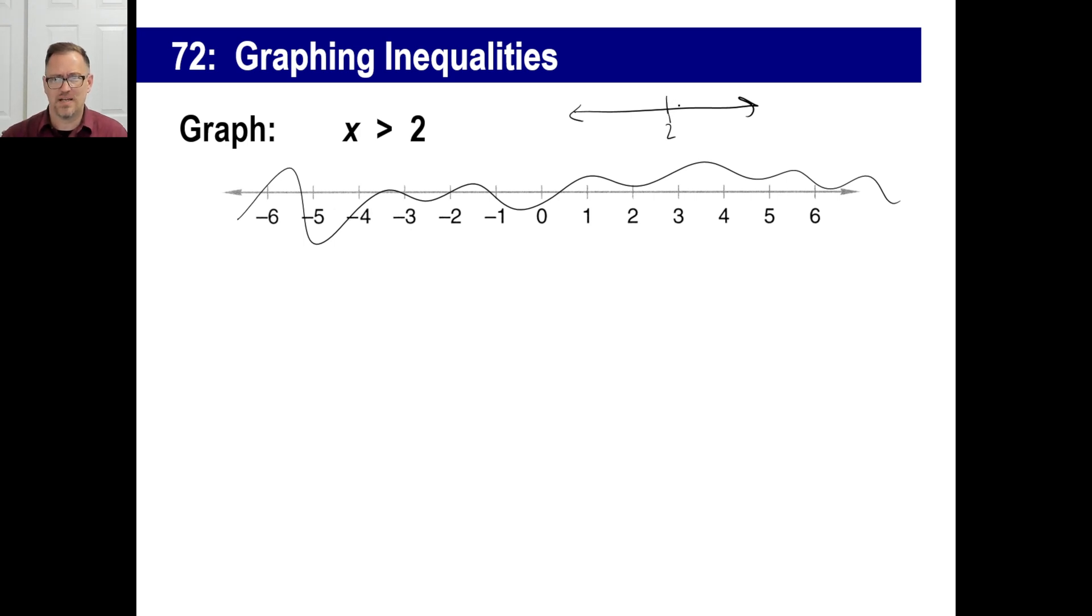When it says x is greater than 2, the way you graph that is to go, okay, well, it doesn't include 2, but it includes everything else to the right of 2. So what you'll go like this is you'll kind of fill in this part of the line right there. And what you're going to do with this to show to the reader that you're not including 2 is you're going to put an open circle right here. So everything to the right of 2, that's what you'll take. It's only greater than 2, all right?